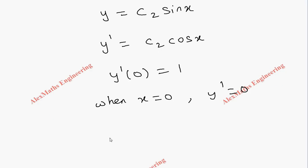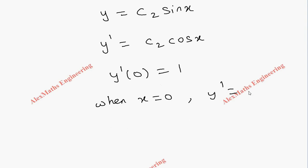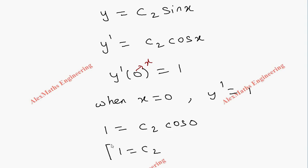By substituting, we get y′(0) = c2·cos(0). So 1 = c2·cos(0). Since cos(0) = 1, we get 1 = c2 · 1. From this, we come to know the value of c2 is 1.